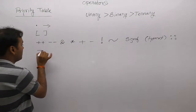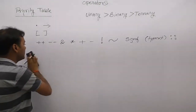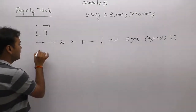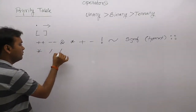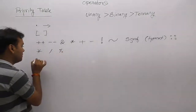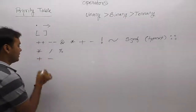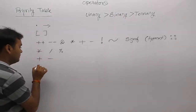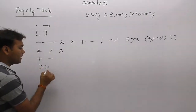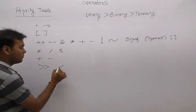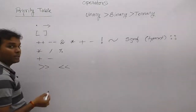Next highest priority is taken by binary arithmetic operators. Multiplication, division, and modulo have the same priority. Plus and minus have the same priority. After arithmetic, next highest priority is taken by the shifting operators — bitwise right shift and bitwise left shift.